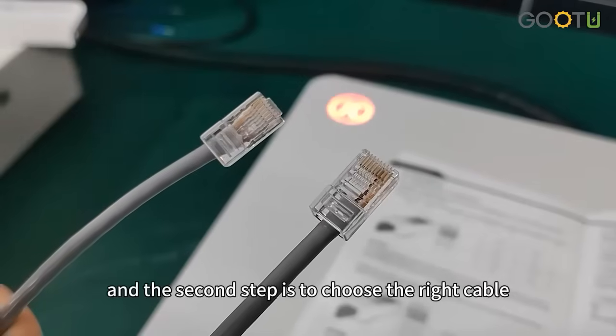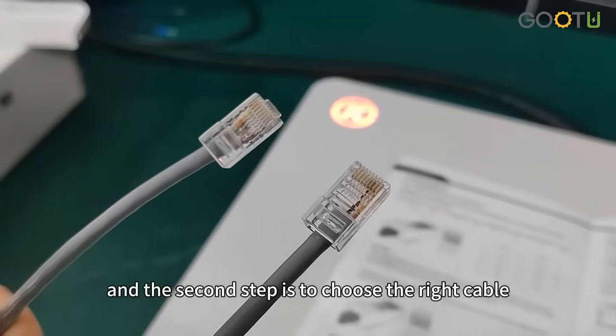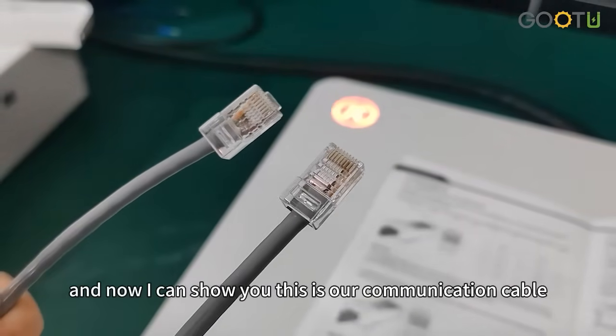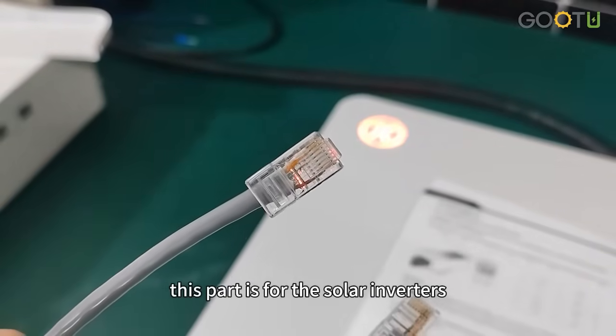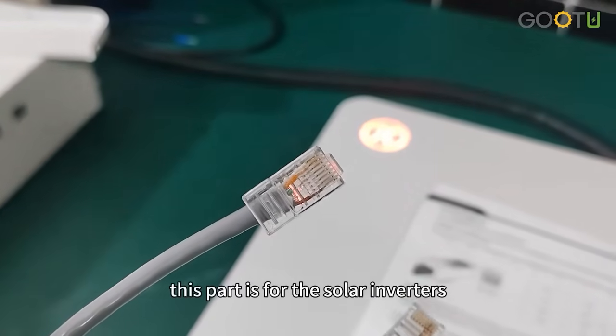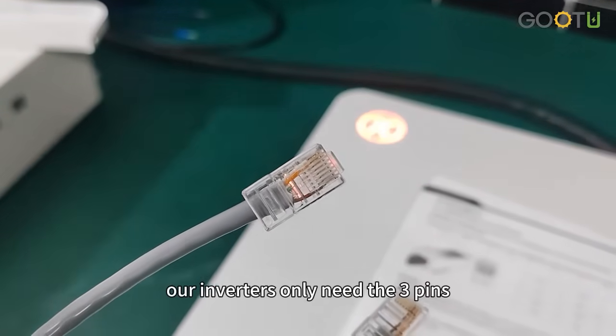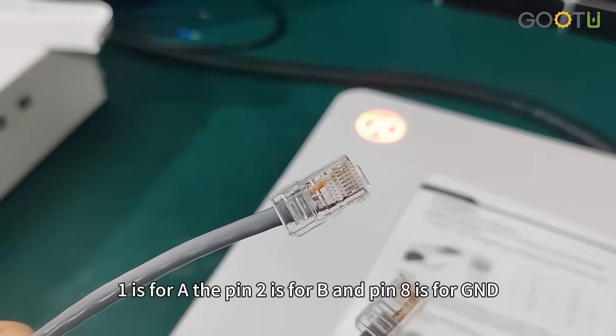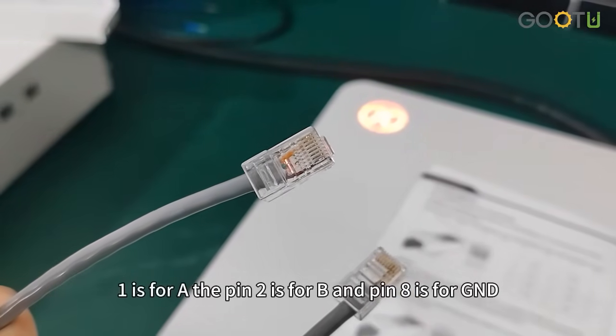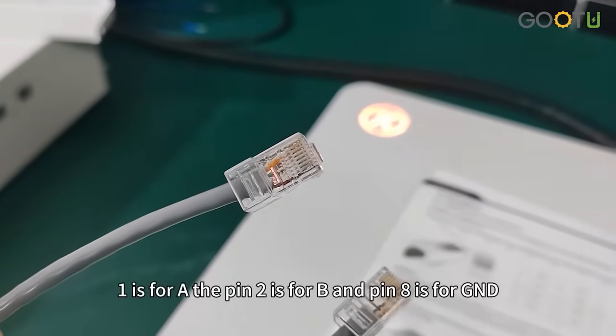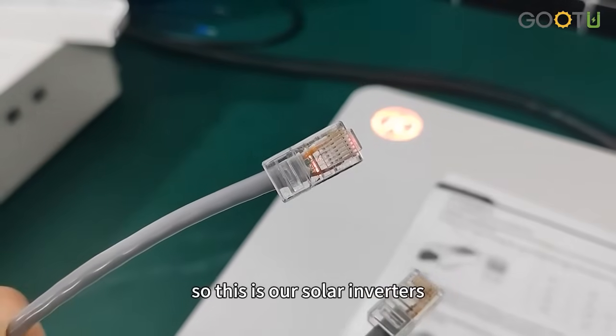The second step is to choose the right cable. Now I can show you this is our communication cable. This part is for the solar inverters. Our inverters only need the three pins: one is for A, pin 2 is for B, and pin 8 is for GND. So this is our solar inverter side.